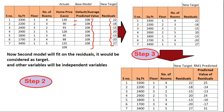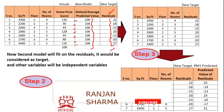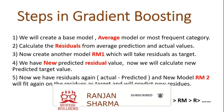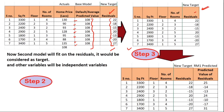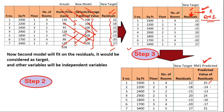According to step 2, we calculate residuals: actual minus predicted. The base model predicted 108 for every row (it's the average model, so it predicts one value for all rows). The residuals are: 22, -18, -15, 20, -13, -20, and 27. For step 3, we create RM1 which takes these residuals as the target variable.